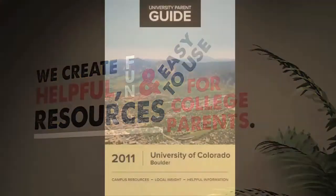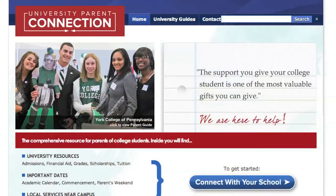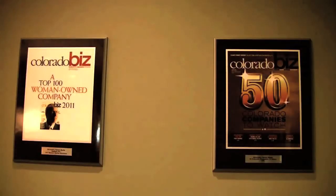I was doing the entrepreneurship certificate and I was in the business plan preparation class with Frank Moyes, and in that class I wrote a business plan to start a parent handbook. We're currently at about 200 campuses all over the U.S. and you can check them out at UniversityParent.com.